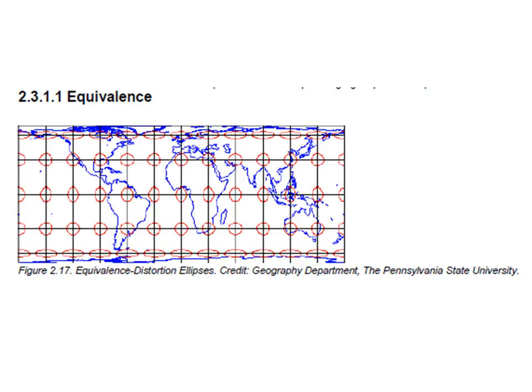Here's another way that we can show the concept of equivalence. Equivalence would mean that an area anywhere on the map would represent an equal area anywhere on the globe. It's very difficult to actually maintain equivalence in a map projection.